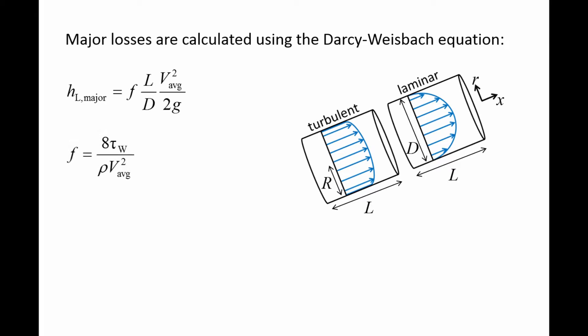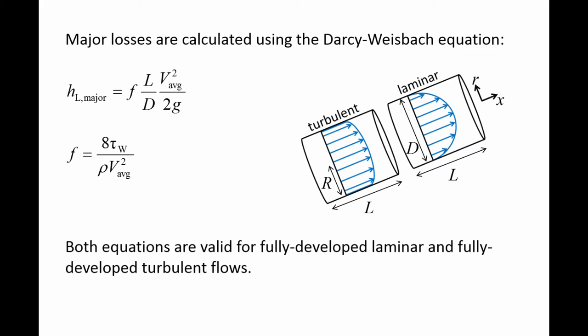Although we found the friction factor f is equal to 8 times the shear stress at the pipe wall, tau W, over rho V squared, we will soon develop a more convenient expression for f. These equations for the major losses and the friction factor are valid for both fully developed laminar and fully developed turbulent flows.